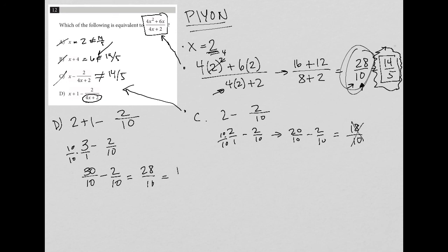We can reduce that to 14 over 5. So that means choice d is the right answer, because it does equal 14 5ths. And we'll do it once for now. Thank you.